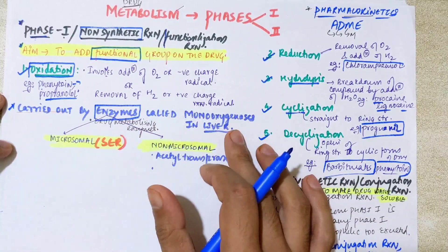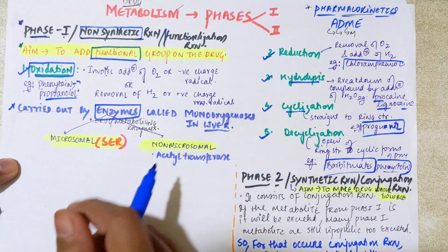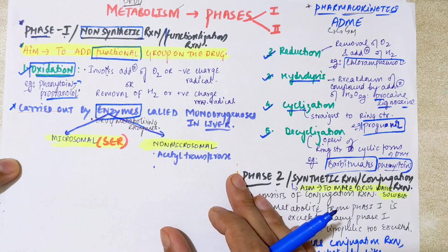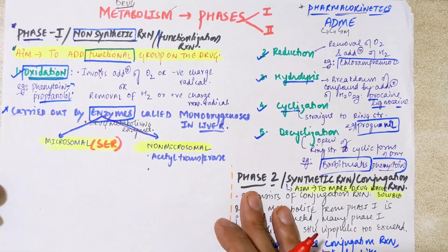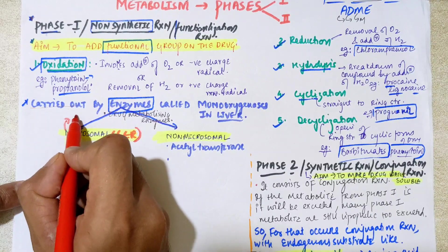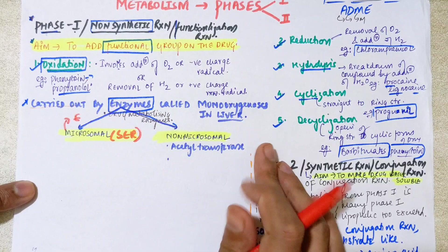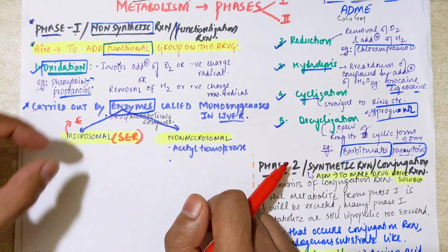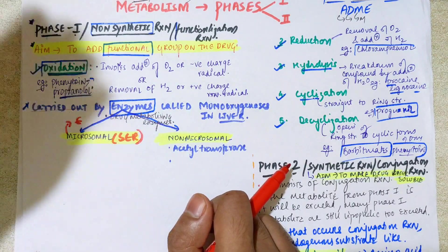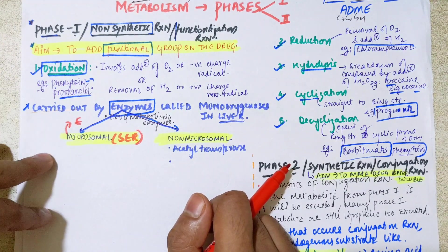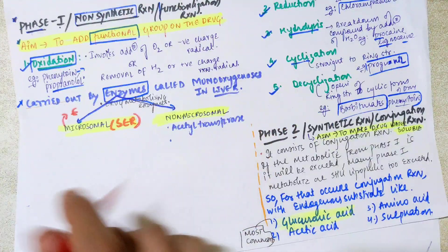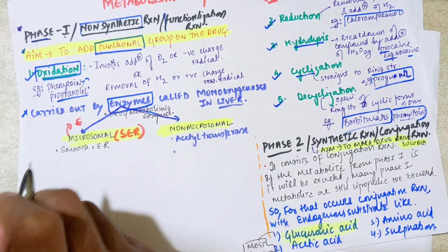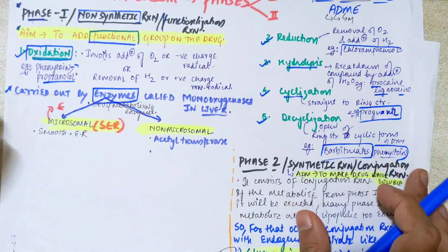Now the main concept to cover is drug-metabolizing enzymes. We have two categories: microsomal and non-microsomal. Microsomal actually refers to the endoplasmic reticulum. We divide enzymes on the basis of microsomal and non-microsomal — not cytoplasmic or nuclear — because microsomal enzymes are specifically found in the smooth endoplasmic reticulum (SER).